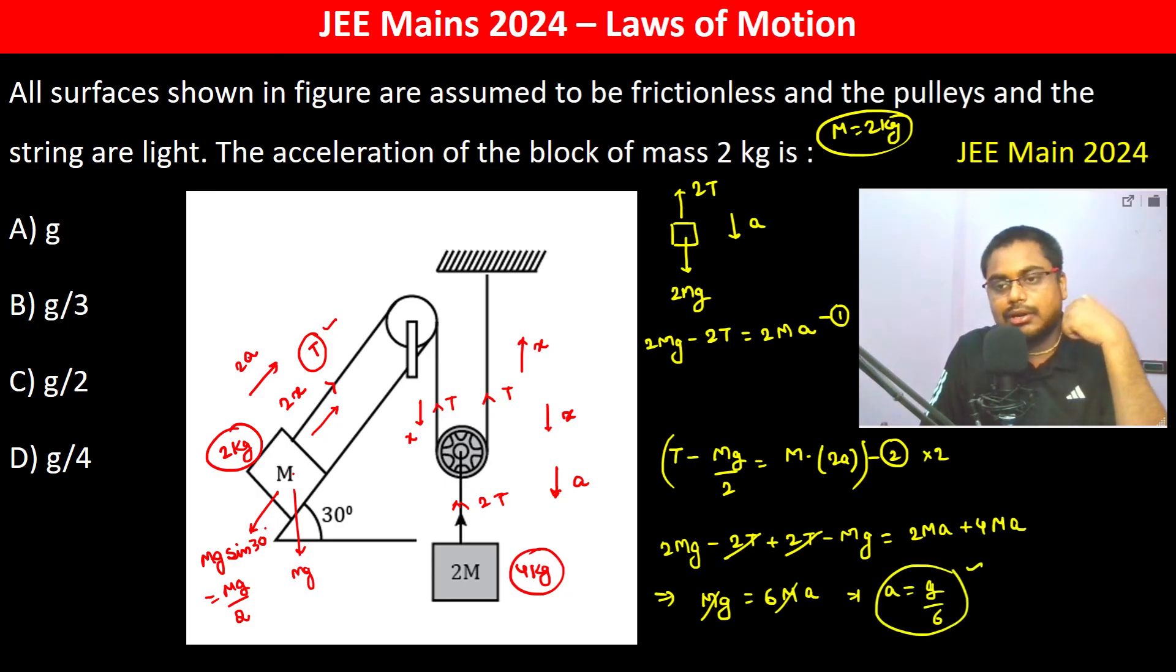But now what we have to find out is the acceleration of the 2 kg block. So therefore it's 2a, therefore it's going to be g by 3. So B is the answer.